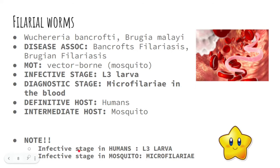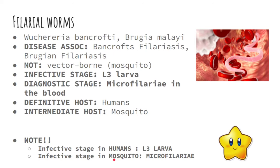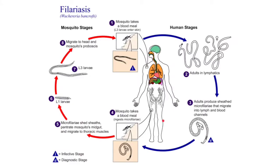Please take note — this has been a recall question in the board exam. If asked what the infective stage of filarial worms in humans is, that is the L3 larva or filariform larva. When a mosquito bites us, the L3 larva enters through our skin and we get infected. If asked what the infective stage of filarial worms in the mosquito is, that is the microfilariae. We will discuss this further so it becomes clearer.